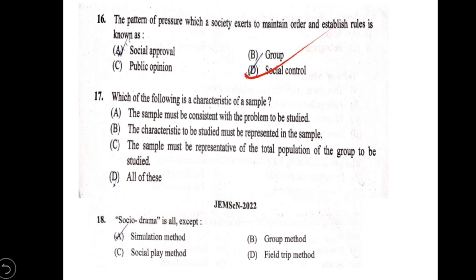Question 17: which of the following are characteristics of a sample? A: the sample must be consistent with the problem to be studied; B: the characteristics to be studied must be represented in the sample; C: the sample must be representative of the total population of the group to be studied; D: all of the above. Option D, all of the above, is correct.